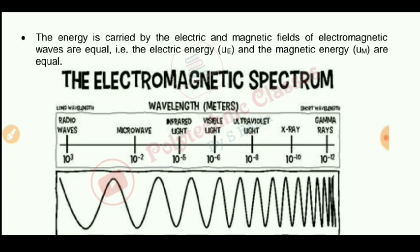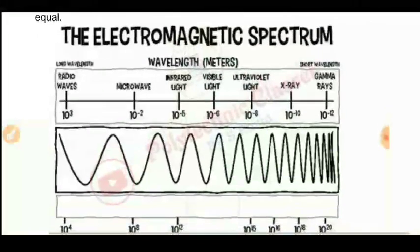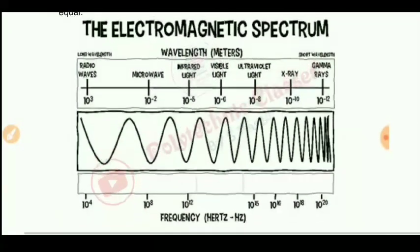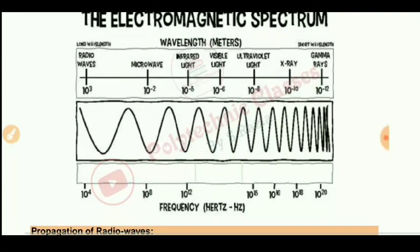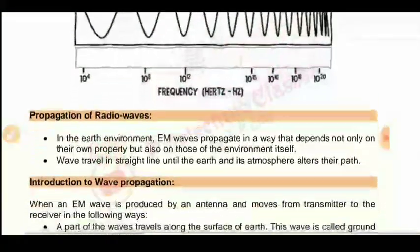Now let's look at the electromagnetic spectrum. It includes radio waves, microwaves, infrared, visible light, ultraviolet light, X-rays, and gamma rays. The lower part shows frequencies and the upper part shows wavelengths. Gamma rays have frequencies starting from 10 to the power 4 up to 10 to the power 20 hertz.